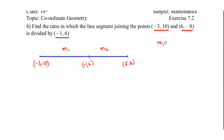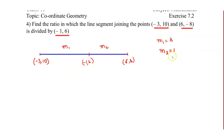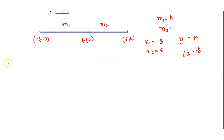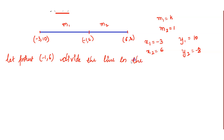We assume that let m1 be k. If we assume some constant value k, we assume that m2 is 1. So x1 value is -3, x2 value is 6, y1 value is 10, y2 value is -8. Let point (-1, 6) divide the line in the ratio k is to 1, where m1 is k and m2 is 1.